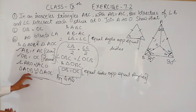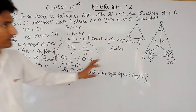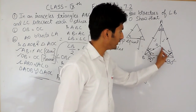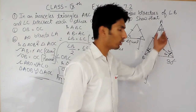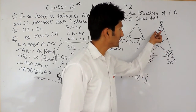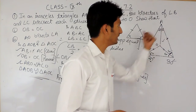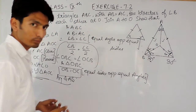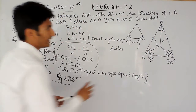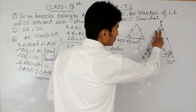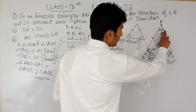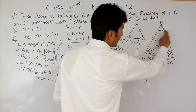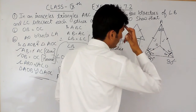Now, if triangles AOB and AOC are congruent, then obviously by CPCT these two angles must also be equal, and if these two angles are equal, then clearly AO must be bisecting angle A.